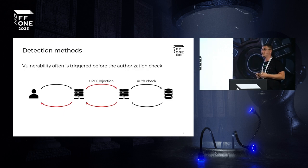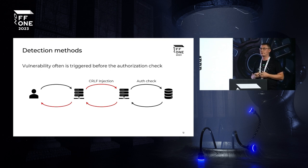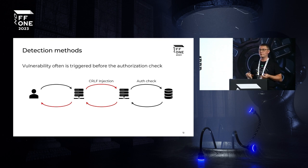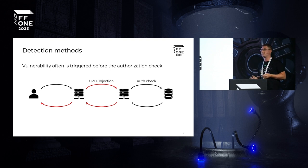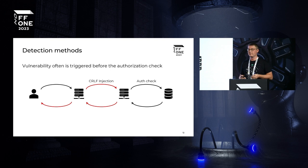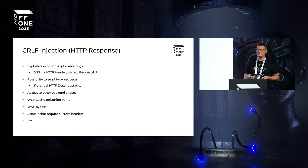Another option is to use duplicate host headers or incorrect characters in the headers, which also triggers a 400 Bad Request error. This applies to both path and header injections. Another noteworthy feature of this vulnerability is that we often trigger an error before the authorization check can happen, so we can trigger these errors in stacked apps that are not available to the user — for instance, in the admin space.